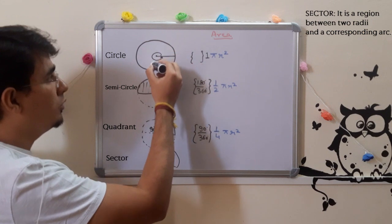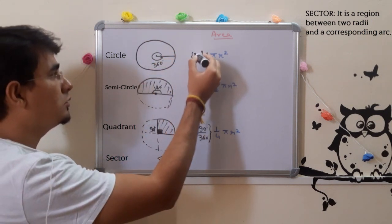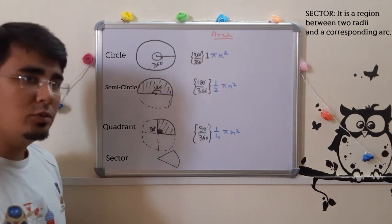You are covering the full angle which is 360 degrees. So 360 degrees over 360 degrees. That is 1 π r².